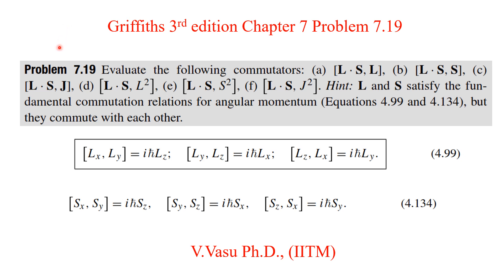Today we will see the solution to Problem 7.19 of Griffith's Introduction to Quantum Mechanics, Chapter 7. The problem 7.19 is to evaluate six commutators. The given hint is that L and S satisfy the fundamental commutation relation for angular momentum, that is equation 4.99 and equation 4.134.